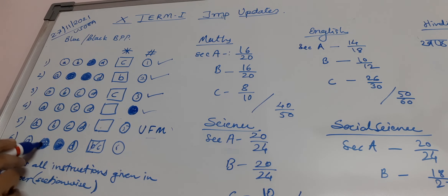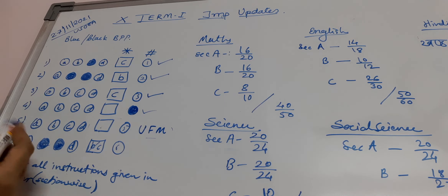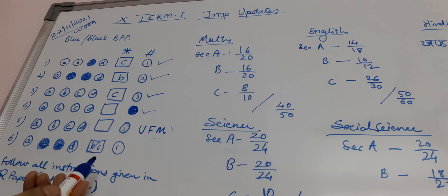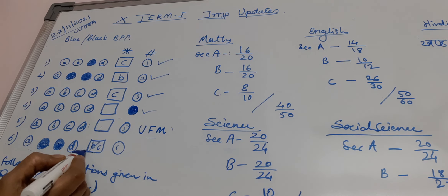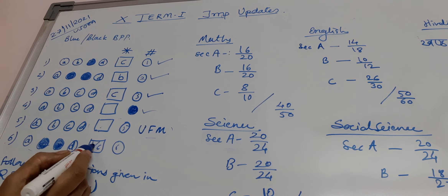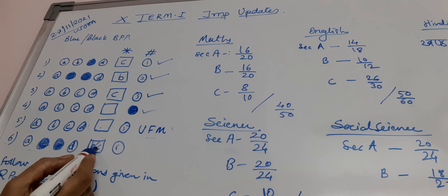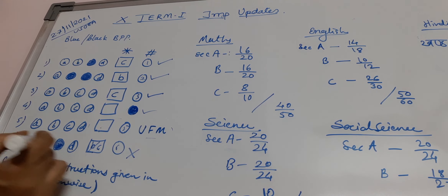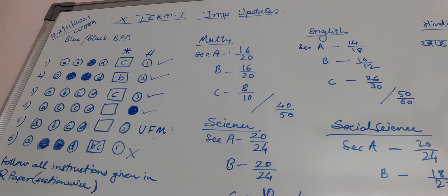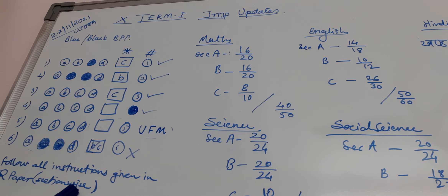Now, you are going to get the chance to darken a circle, but if you feel B is the correct option and then you try to correct it by writing the letter C here — writing the letter — this will not get evaluated. This will be the wrong way. Whatever instructions are provided to you will be given in your question paper and you should solve the questions section-wise only.